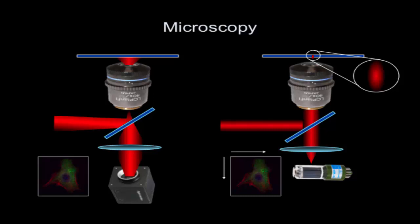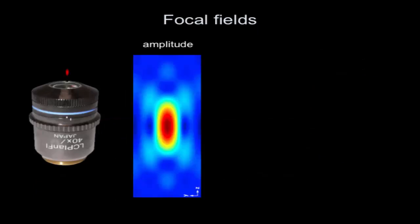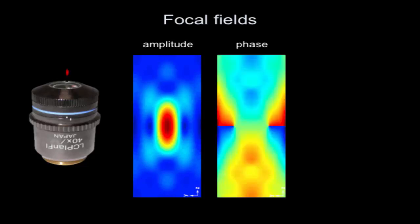The image drives home the point that you have to move that focal spot around rapidly to take an image. These focal fields are key to laser scanning microscopy. It's important to realize that focal fields have both an amplitude and a phase, because they're electromagnetic fields. Typically in imaging you don't care about the phase so much, but in some modalities the phase of the field is an important ingredient.